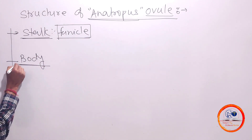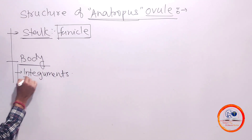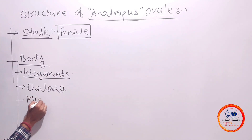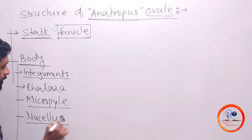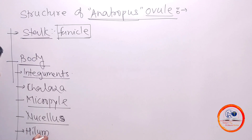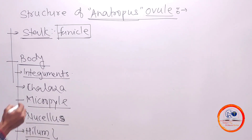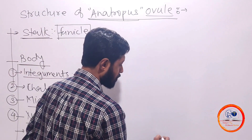The body of the ovule has several other parts: there is a presence of integuments which are the walls of the ovule. Below that is the chalaza. Then there is a presence of micropyle. Most importantly, the bulge part present inside the integument is called nucellus. Two auxiliary parts are called hilum and raphe. The hilum is the point of attachment of the stalk with the body of the ovule.